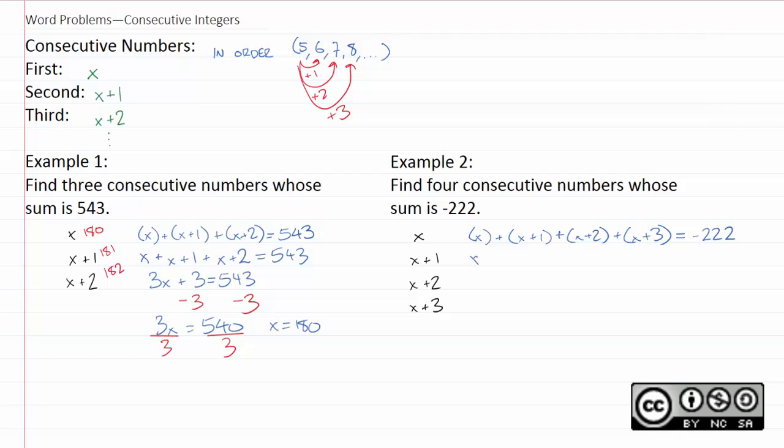Again, you can drop the parentheses. You don't really need them for anything. I still recommend you write them down for the first step, though, because we're going to see some problems a little later in this section where they will come in handy. Don't forget, this is a negative number, negative 222. If you add up all your x's, you get 4x. 1 plus 2 plus 3 is 6. Then we still have negative 222.